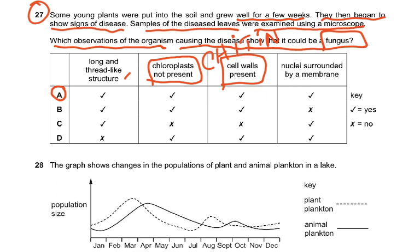Nucleus surrounded by a membrane — yes, that is correct. So the features are: thread-like hyphae structures, chloroplasts never present in a fungus, cell wall always present, and nucleus always present — it is a eukaryote. So nuclei are always present in fungi.